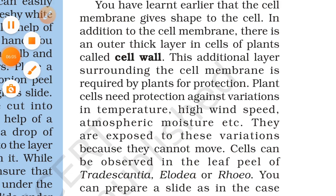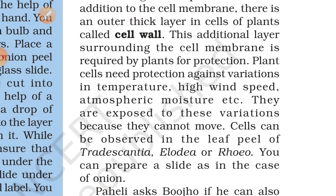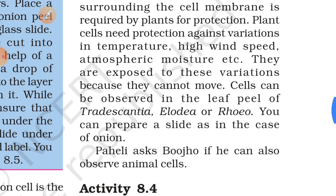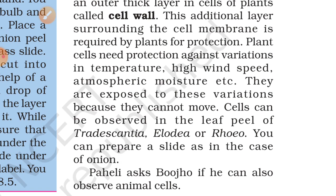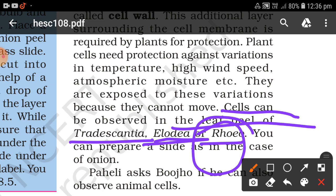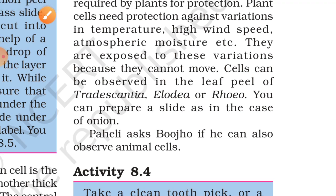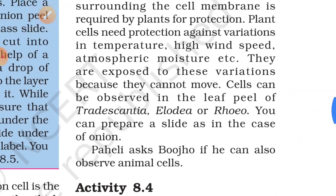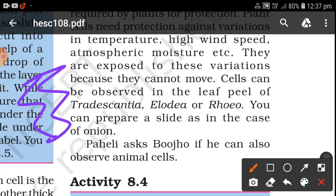Cells can be observed in a leaf peel slide, just as in the case of an onion. You can prepare a slide using an onion peel. Since the onion peel is transparent, we add color and then observe the cell under a microscope.